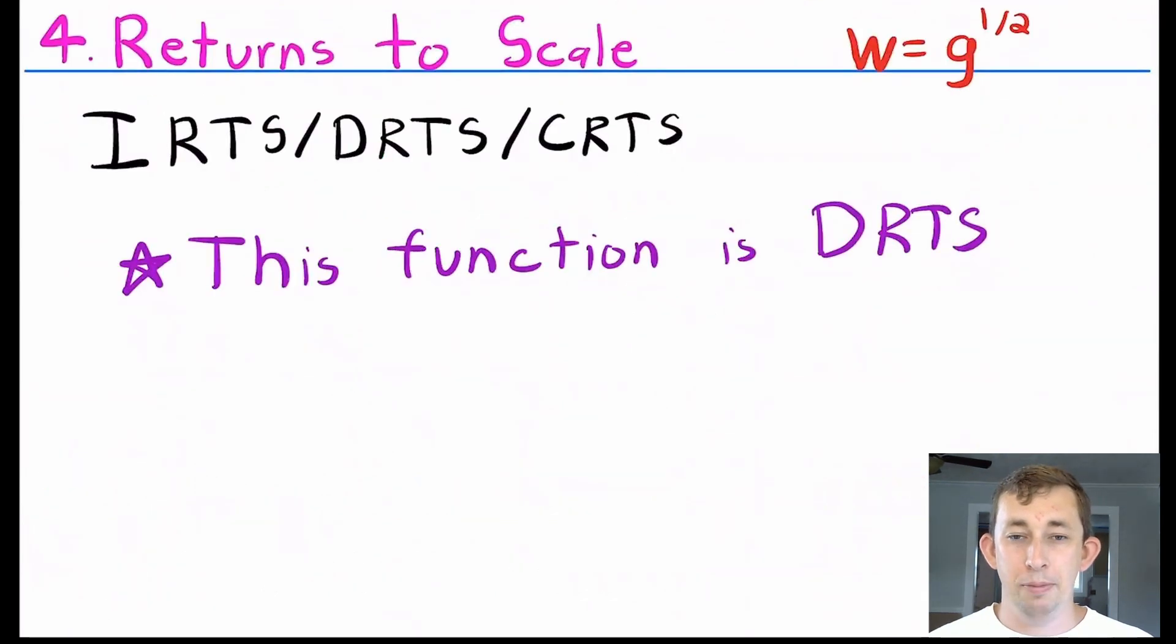The fourth and last property of a production function is returns to scale, which I talked about extensively in another video. But your production function can be increasing, decreasing, or constant returns to scale. This function happens to be decreasing returns to scale.